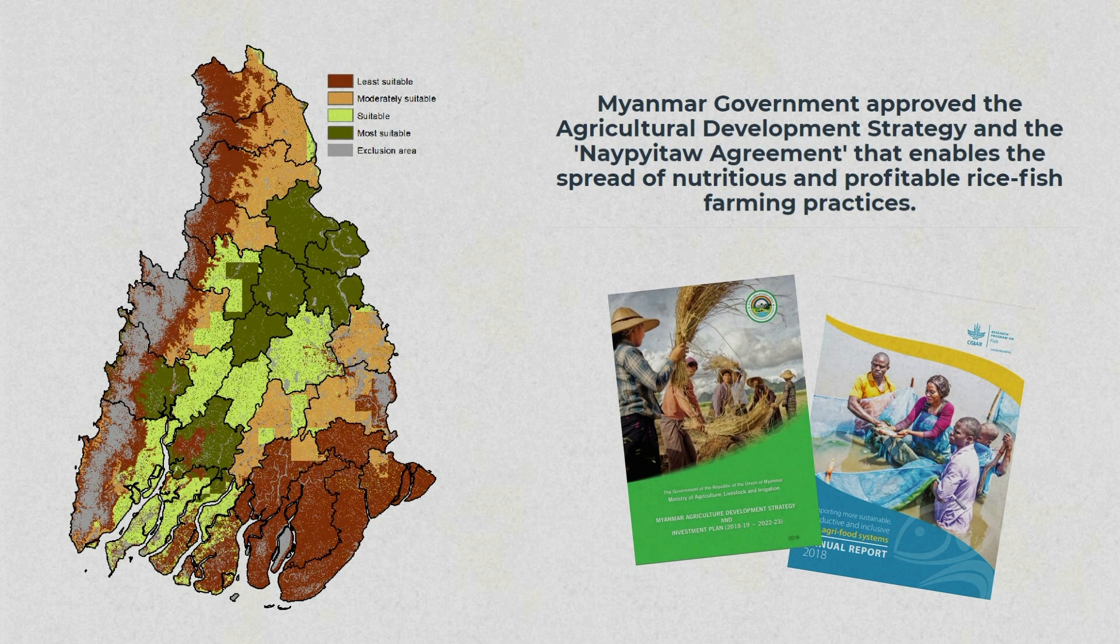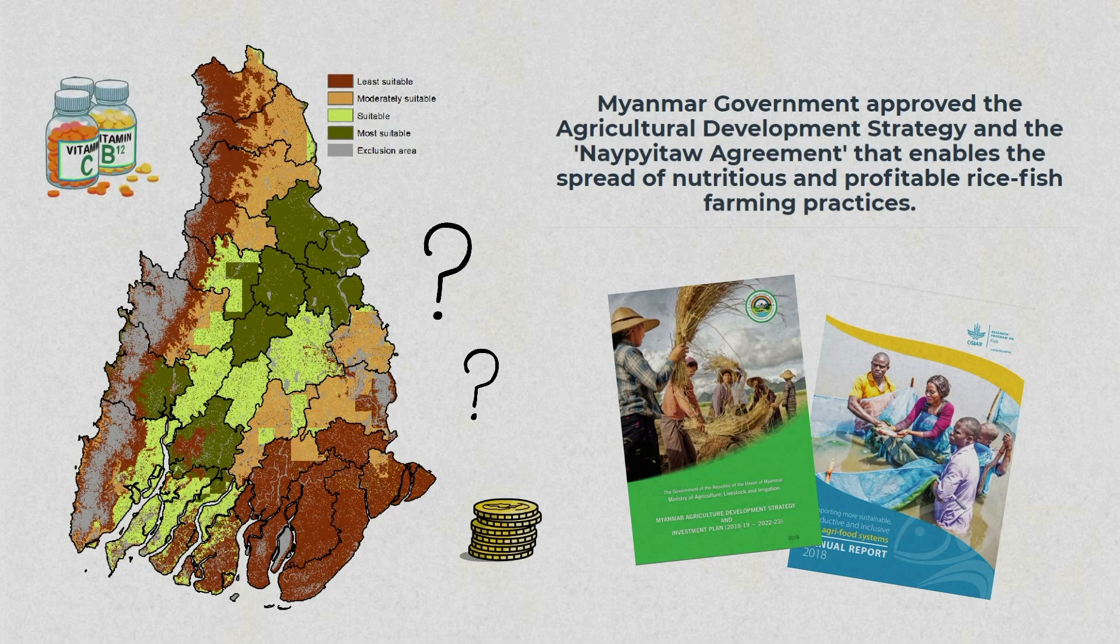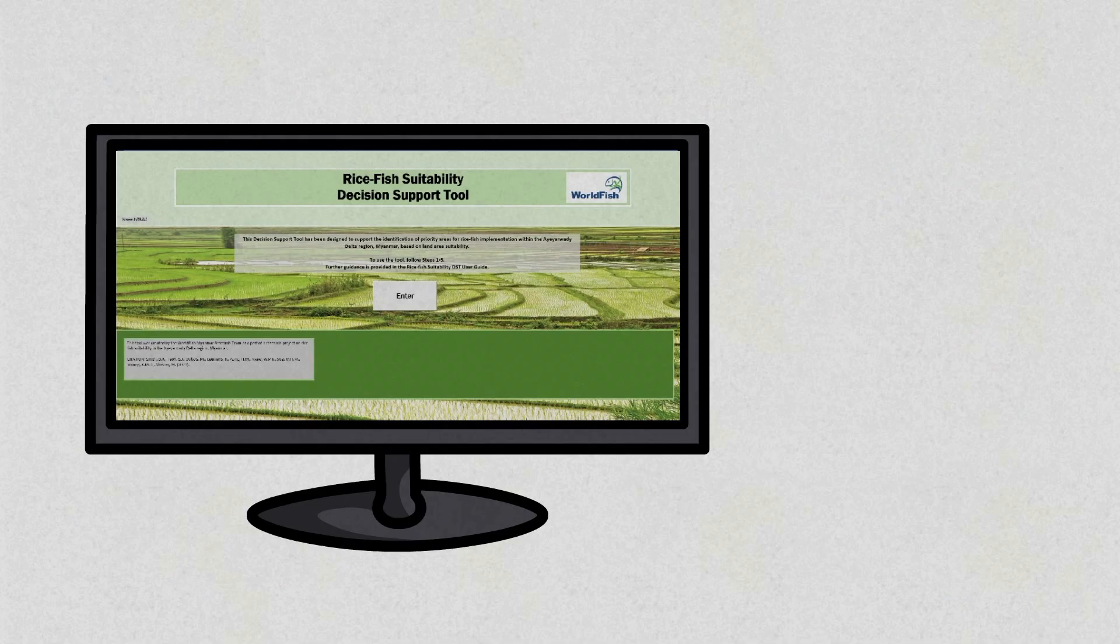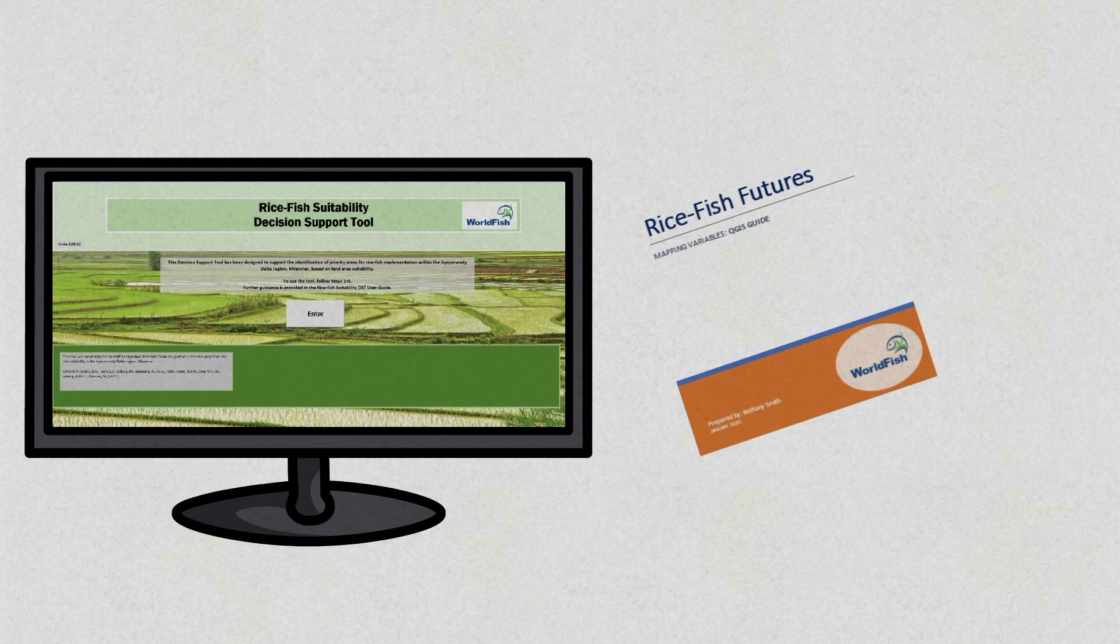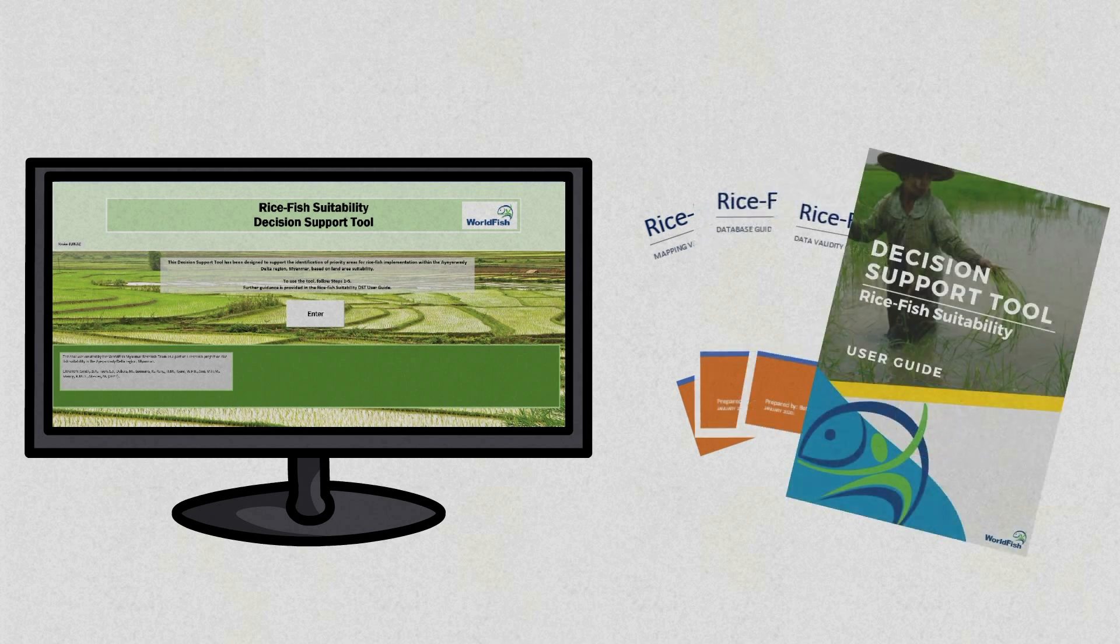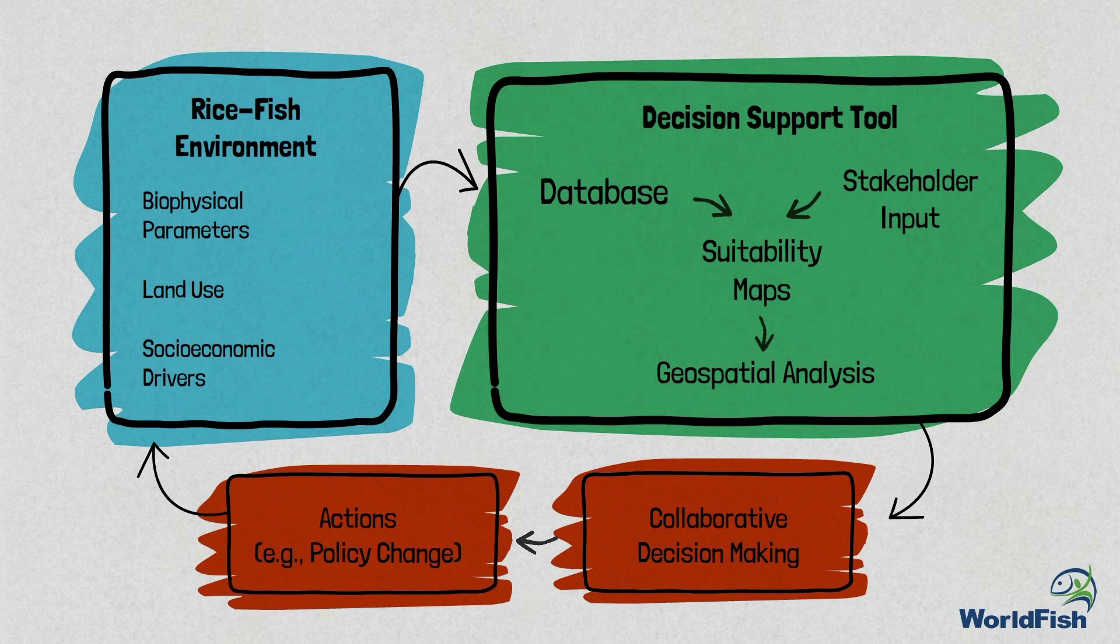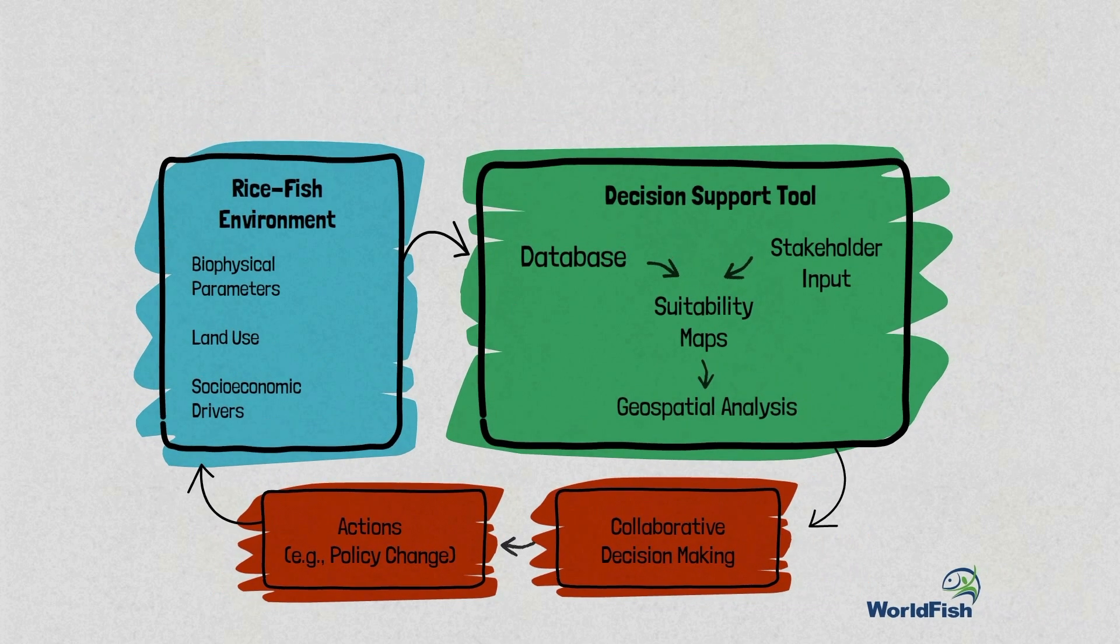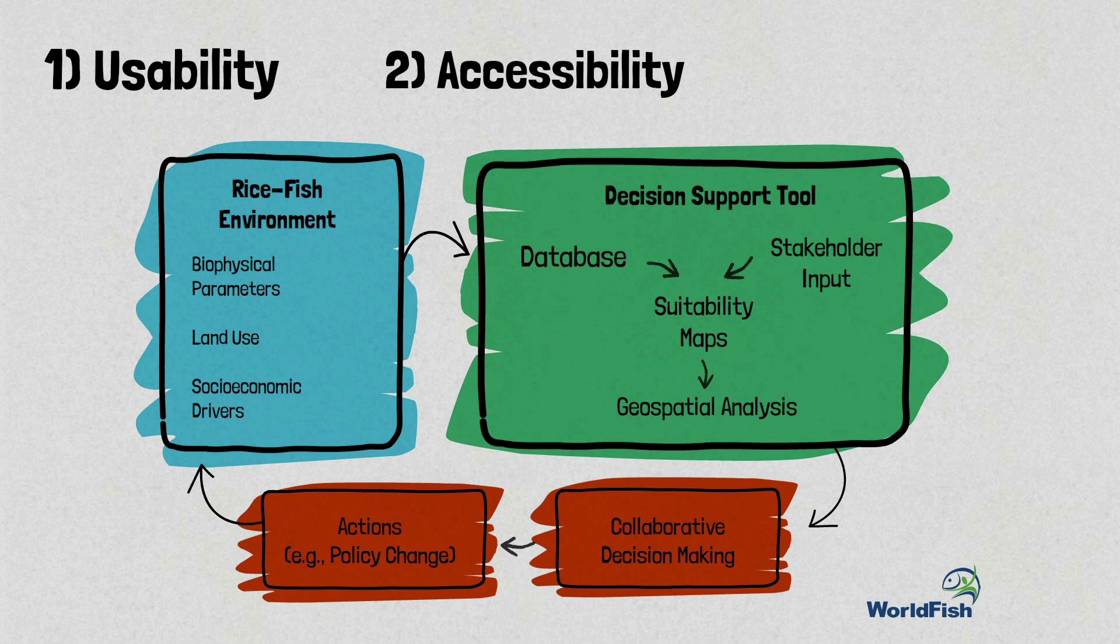However, further work is required to identify where rice fish systems should be implemented to best benefit rural communities at the local scale. This has been facilitated through the development of a decision support tool and accompanying user guides, which enable rice fish suitability to be determined using a participatory modeling and scenario-based planning process. The tool has been developed with three key priorities in mind: usability, accessibility and applicability.